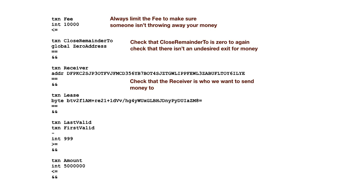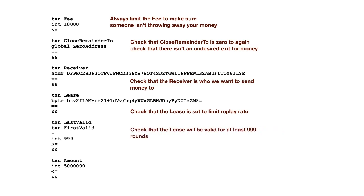We check that the receiver is a specific recipient in this contract, so that only a specific person can take the money as authorized by this. We check a lease to say that only one of these transactions can hold this lease in the first valid to last valid period — so once every 999 rounds — you can do this contract so that the account authorizing this contract gives away up to 5 Algos to the designated recipient every thousand rounds. All of these things are just AND, AND, AND down the line — they have to all be true.